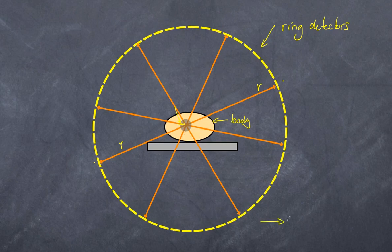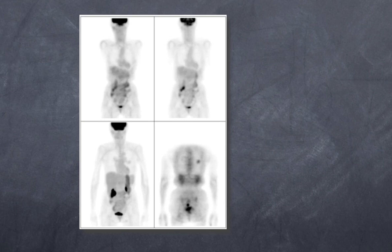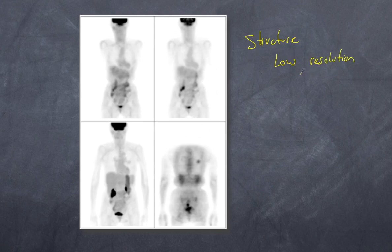All of this information is fed into a computer and analyzed to produce an image. Here is an image of a PET scan. Let's look at the features. The first thing you should notice is that in terms of structure, we have low resolution. A doctor is not going to provide you a PET scan simply because he wants to get a good structural feature of your body.